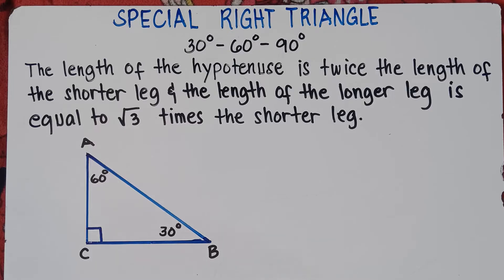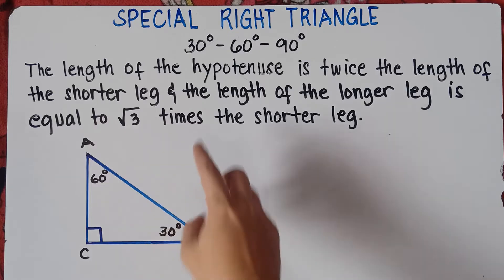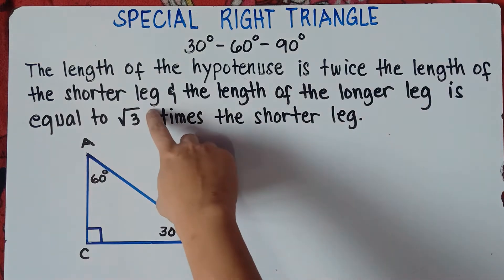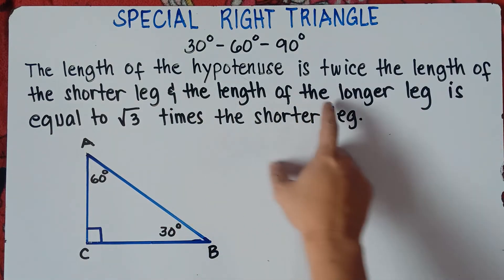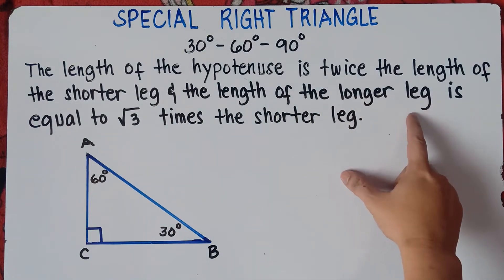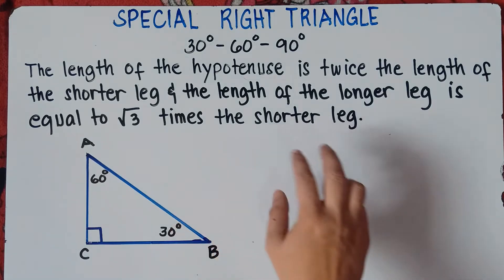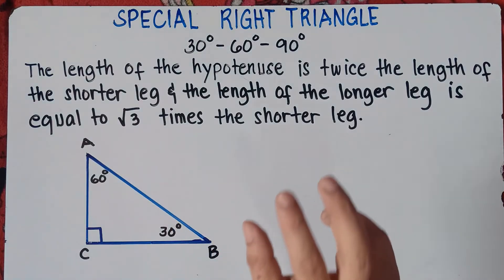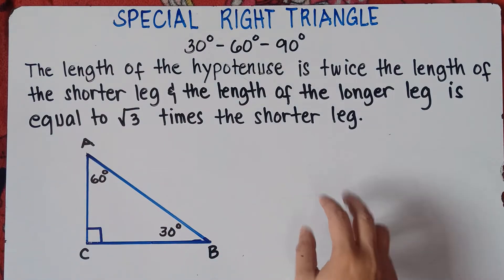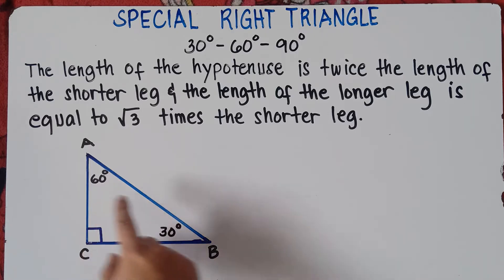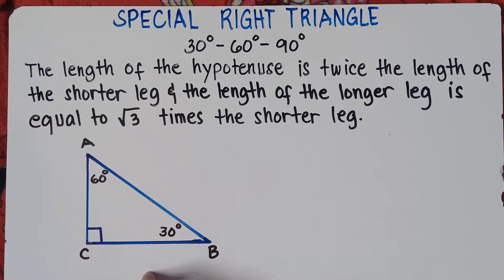Now according to the theorem, the length of the hypotenuse is twice the length of the shorter leg, and the length of the longer leg is equal to square root of 3 times the shorter leg. Now before writing the formula, we need to identify what would be the shorter leg and what would be the longer leg in this given right triangle.